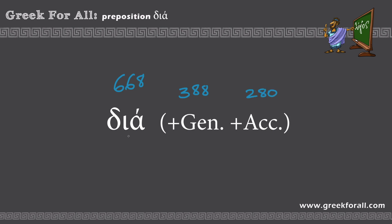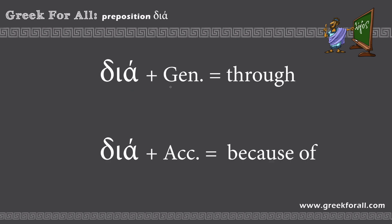The meaning of this preposition depends on whether the following word is in the genitive or accusative case. Dia plus the genitive means 'through,' and dia plus the accusative means 'because of' — or we could say 'on account of,' 'for the sake of,' or simply 'for.'